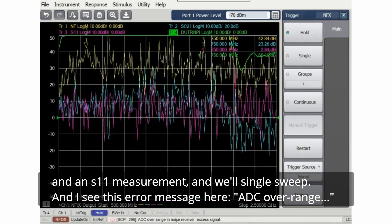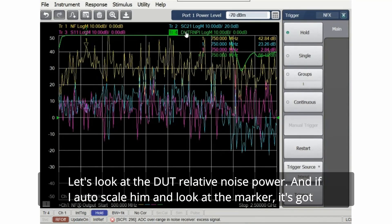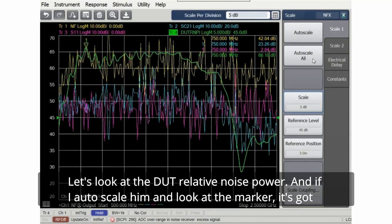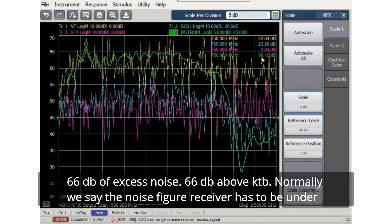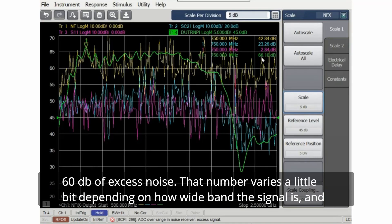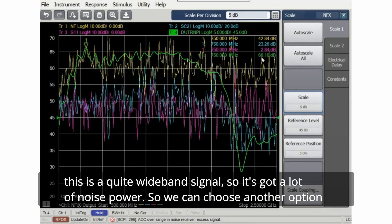I see this error message here, ADC over range. Let's look at the DUT relative noise power. If I auto scale and look at the marker, it's got 66 dB of excess noise, 66 dB above KTB. Normally we say the noise figure receiver has to be under 60 dB of excess noise. That number varies a little bit depending on how wideband the signal is, and this is a quite wideband signal so it's got a lot of noise power.